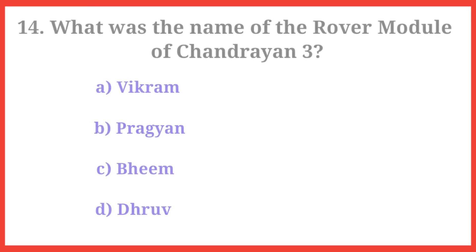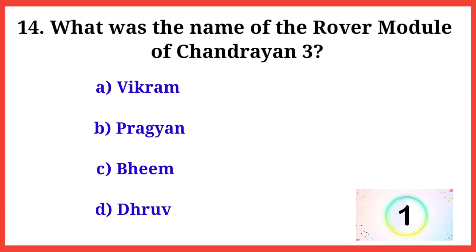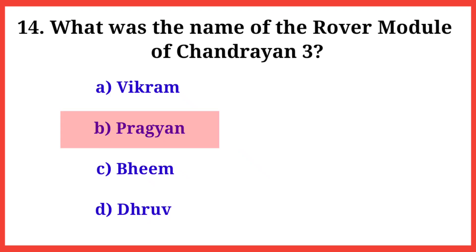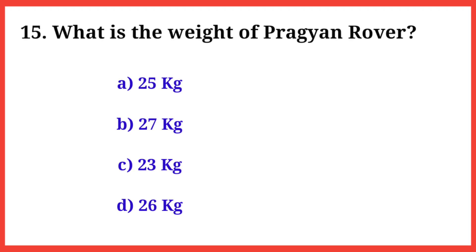Q14. What was the name of the rover module of Chandrayaan-3? The right answer is option B: Pragyaan.